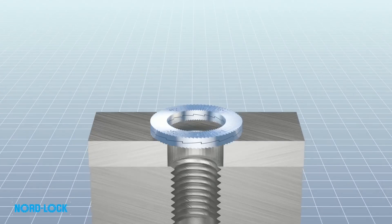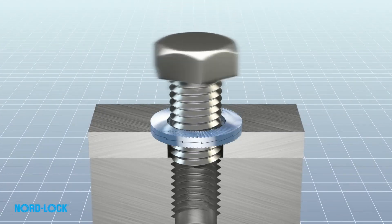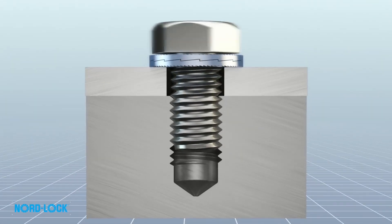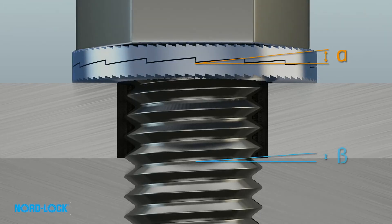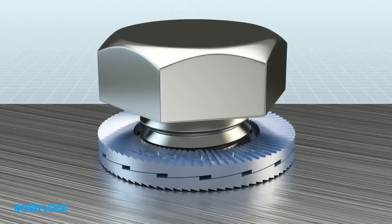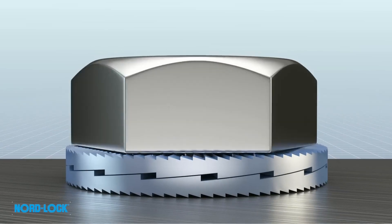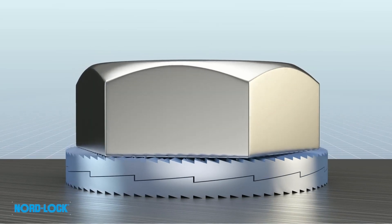Nord Lock is an innovative solution comprising two washers in a pair. This solution uses an effective principle: geometry. The cam inclination is greater than the pitch of the thread of the bolt. The Nord Lock washers create a wedge effect underneath the bolt head. This prevents any rotation in the nut.